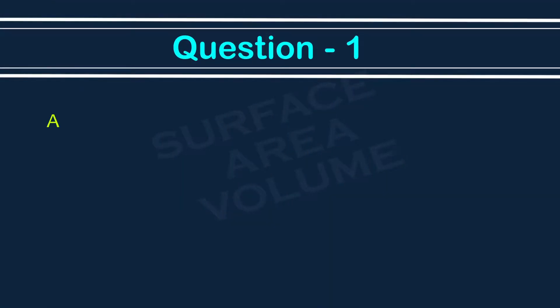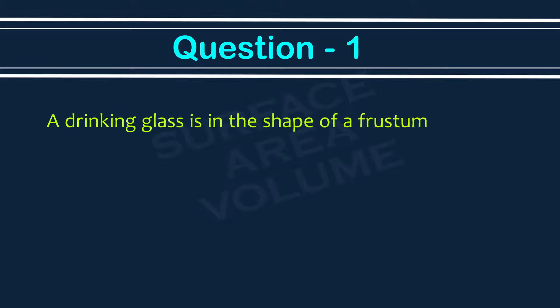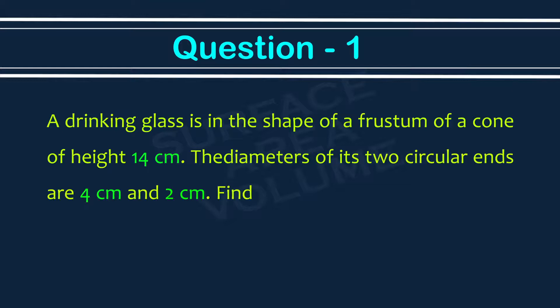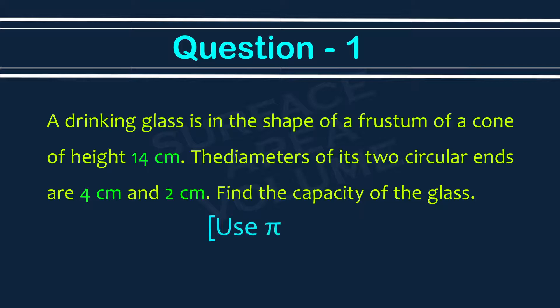Surface area and volume, Exercise 13.4, Question number 1. A drinking glass is in the shape of a frustum of a cone of height 14 centimeter. The diameters of its two circular ends are 4 centimeter and 2 centimeter. Find the capacity of the glass. Use pi equal to 22 upon 7.